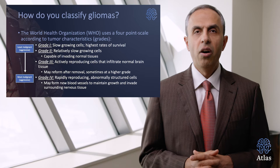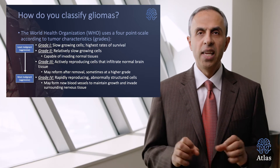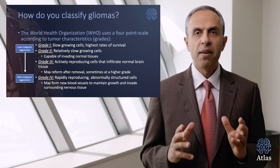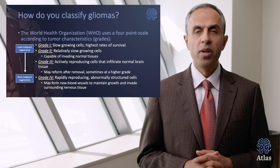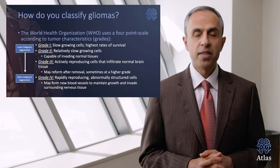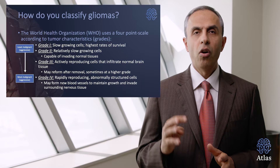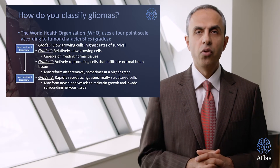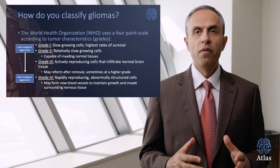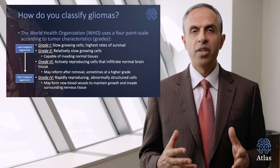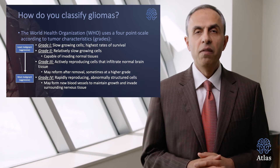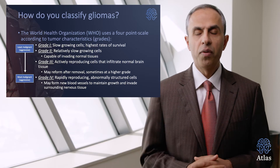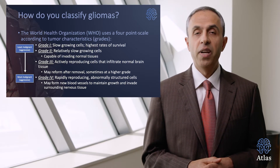Grade 3 tumors are actively reproducing cells that infiltrate the normal brain and can unfortunately transform after removal into a higher-grade tumor, significantly affecting the patient's lifespan. Grade 4 tumors are rapidly reproducing, abnormally structured, have abnormal vessels, may form new vessels and bleed, and due to their rapid growth, affect the patient's lifespan very negatively.